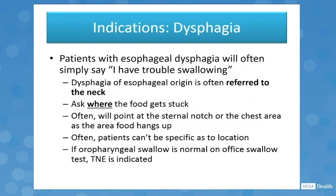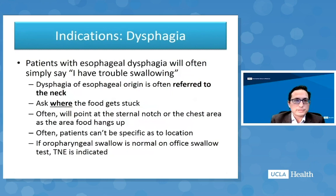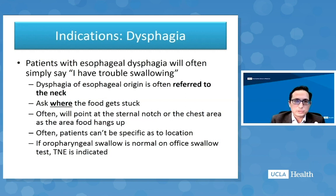The main indication for TNE is patients with dysphagia. Patients with esophageal dysphagia will often simply say they have trouble swallowing, and dysphagia of esophageal origin is often referred to the neck. If you ask where the food gets stuck, they might point to the sternal notch or chest, but more often than not patients can't be specific about the location. In my practice, if I feed the patient food in the office and their oropharyngeal swallowing is normal but they have a very strong dysphagia history, that's a perfect patient who needs a transnasal esophagoscopy.